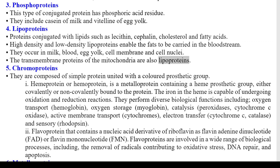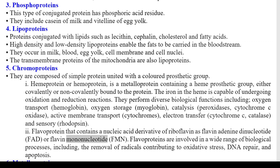5) Chromoproteins — composed of simple protein united with a colored prosthetic group. A heme protein (hemoprotein) is a metalloprotein containing a heme prosthetic group, either covalently or noncovalently bound to the protein; the iron in the heme is capable of undergoing oxidation and reduction reactions. They perform diverse biological functions including: oxygen transport (hemoglobin), oxygen storage (myoglobin), catalysis (peroxidases, cytochrome C oxidase), active membrane transport (cytochromes), electron transfer (cytochrome C, catalase), and sensory (rhodopsin). 2) Flavoproteins — contain a nucleic acid derivative of riboflavin as flavin adenine dinucleotide (FAD) or flavin mononucleotide (FMN); involved in a wide range of biological processes including removal of radicals contributing to oxidative stress, DNA repair, and apoptosis. 6) Metalloproteins — found in combination with metallic ions; involved in biochemical processes. Examples: ferritin (Fe), carbonic anhydrase (Zn), ceruloplasmin (Cu).